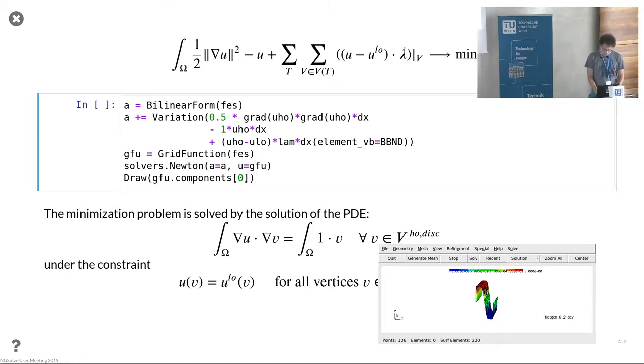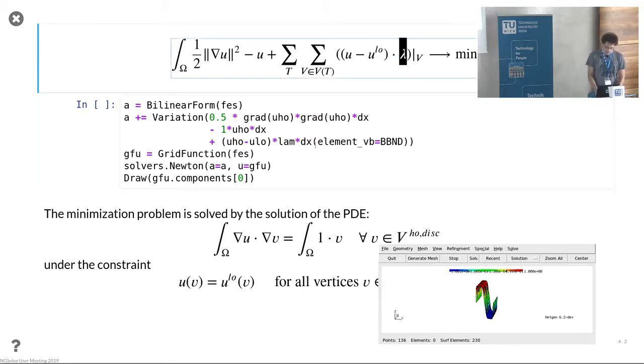But we also add the Lagrange multiplier here, which says that u minus the low-order function should be zero with respect to this test space lambda. And this is what we have now in the formulation, and this is evaluated at all the vertices. So what we're essentially saying here is that at every element, at every vertex of every element, we want to have that the high-order function and the low-order function coincide now. So these are exactly - the lambda space has one degree of freedom per vertex per element. And this is what we can constrain now with that.